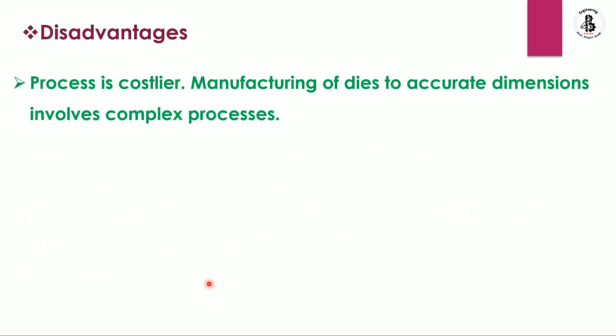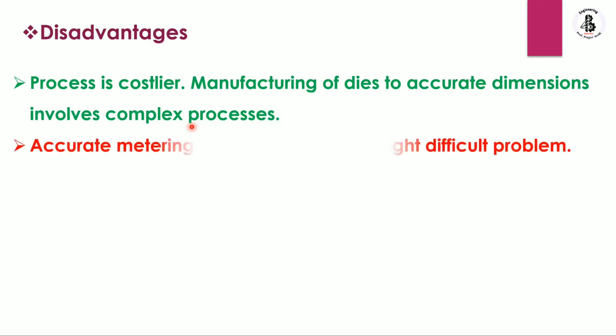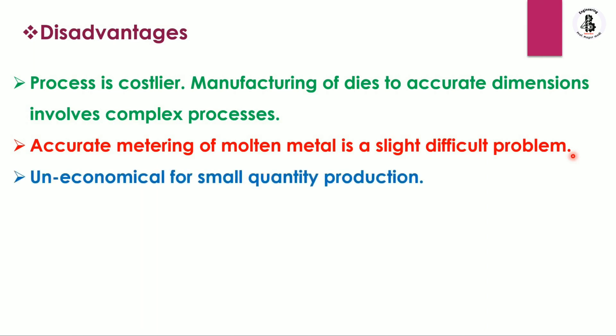Some of the disadvantages: the process is costlier. Manufacturing of the dies to accurate dimensions involves a complex process, which increases the price of the components. Accurate metering of the molten metal is a significant problem — if not calculated accurately, it can cause oversizing or damage to the top die as well as the bottom die. It is also uneconomical for small quantity production and is only feasible for mass production.